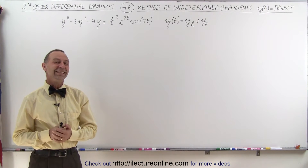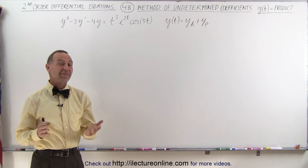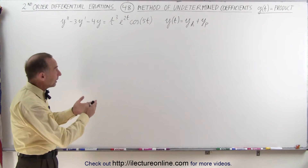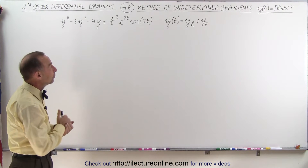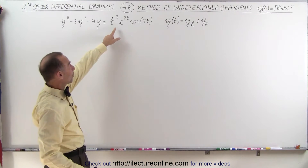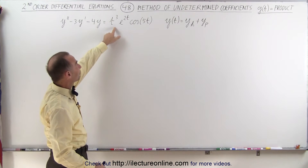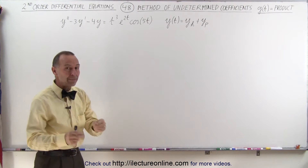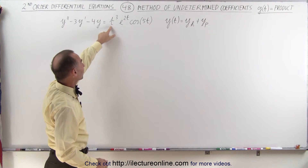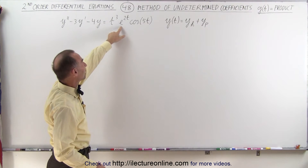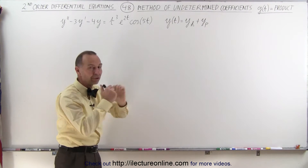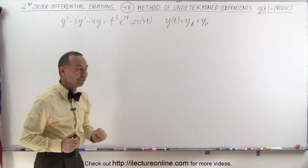Welcome to iLectroOnline. Here we have an example where we try to apply the method of undetermined coefficients, where the function on the right side, g of t, is now a product of different functions. We have t cubed, e to the 2t, and the cosine of 5t all multiplied together.